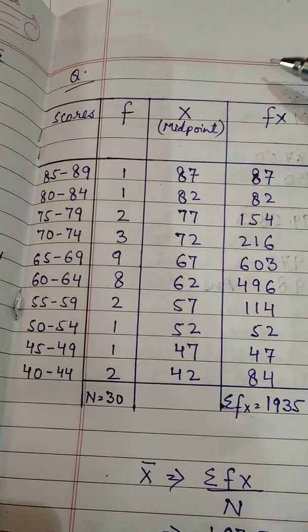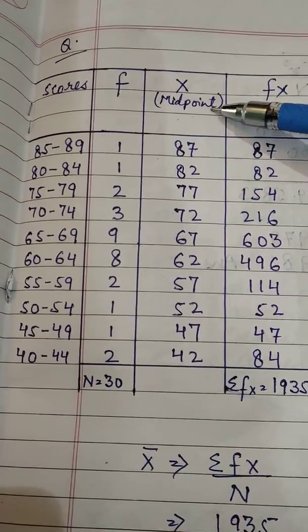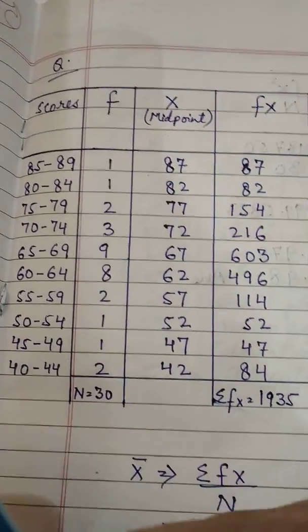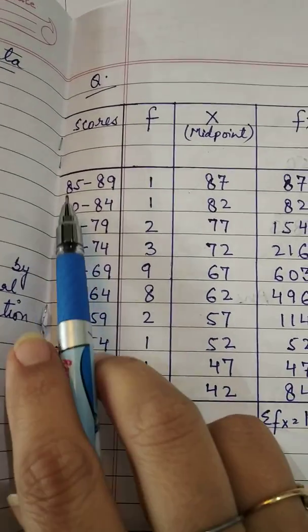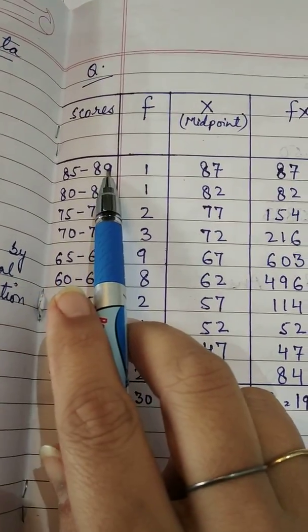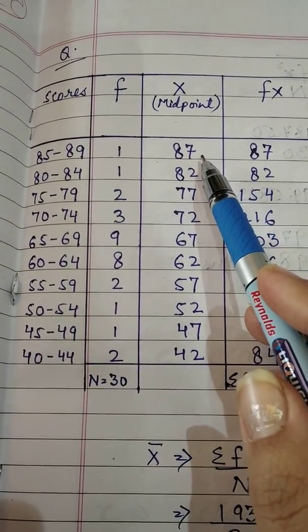Aap kya karenghe? Sabse pahle aap calculate karenghe this capital X. X is what? X is midpoint. Kis ka midpoint hai? In sabhi class intervals ka midpoint hai. Aap dhekhiye bhoat easy hai. 85 se 89 hai. Toh 87 will be class midpoint of this particular class interval.